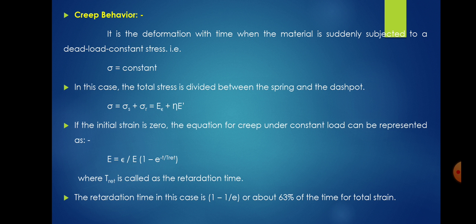Therefore: sigma = sigma_s + sigma_r = E × epsilon + eta × epsilon_dot. If the initial strain is zero, the equation for creep under constant load can be represented as: epsilon(t) = (sigma_0 / E) × (1 − e^(−t / t_retard)), where t_retard is called the retardation time. The retardation time corresponds to achieving 1 − 1/e, or about 63 percent, of the total strain.